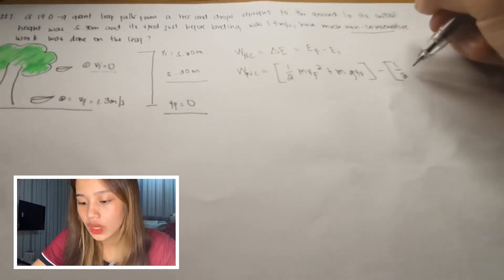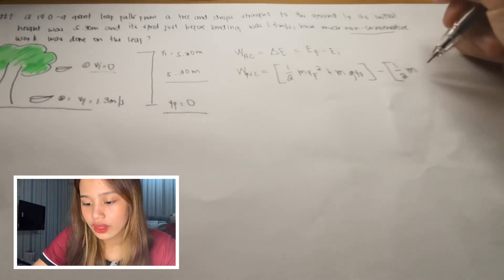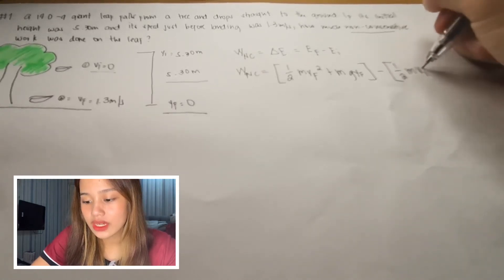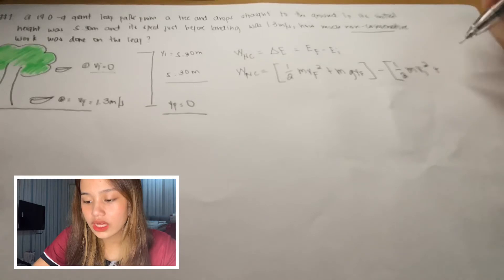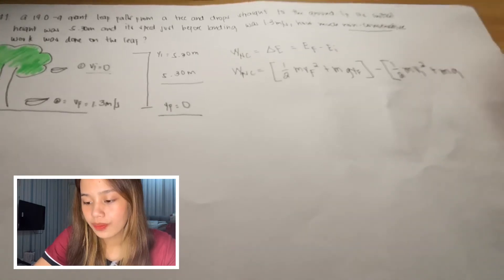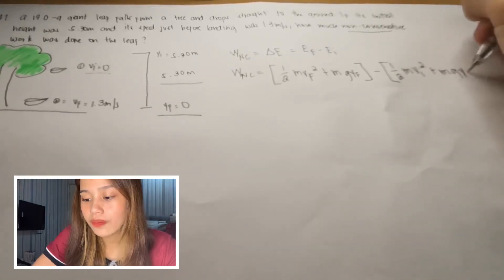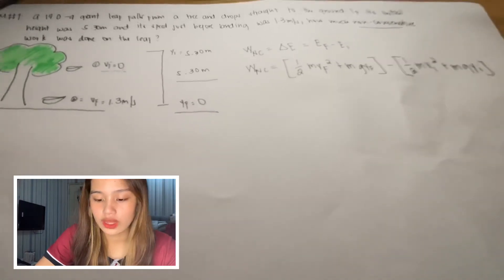Same thing again but with initial velocity. 1/2 m v_i squared plus m times g times the initial position.